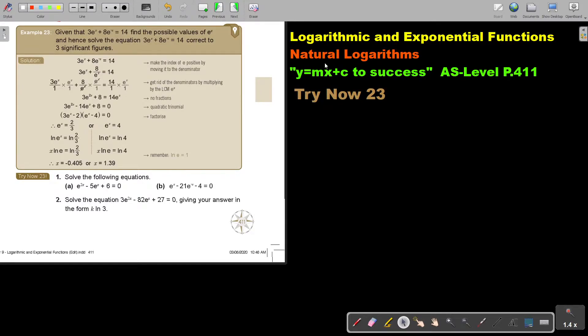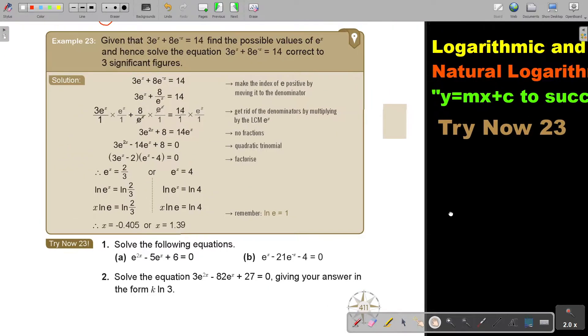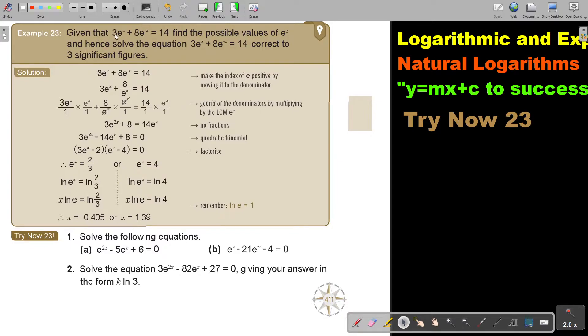In this video, we will continue with natural logarithms. You will find this on page 411 in the Namibia AS Level Mathematics textbook y equals mx plus c to success. Let's look at another example. Given that 3e to the power x plus 8e to the power negative x equals 14, find the possible values of e to the power x and hence solve the equation correct to 3 significant figures.